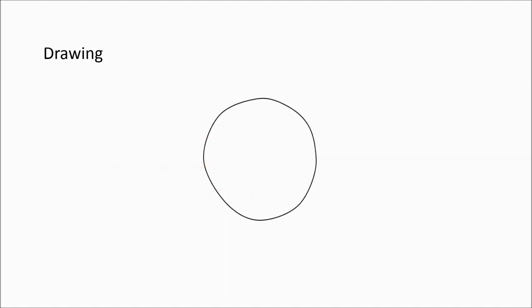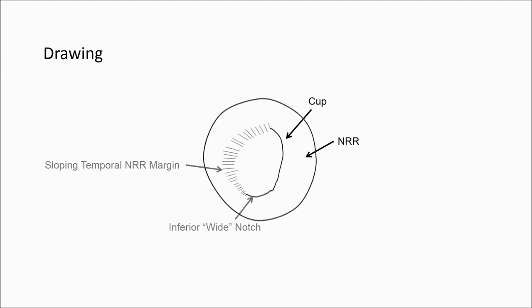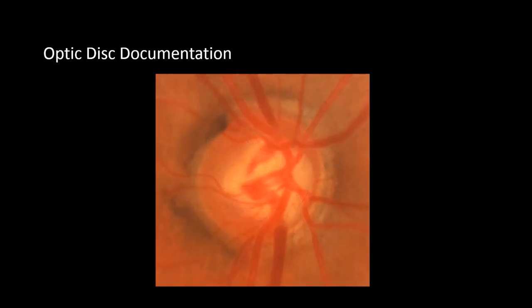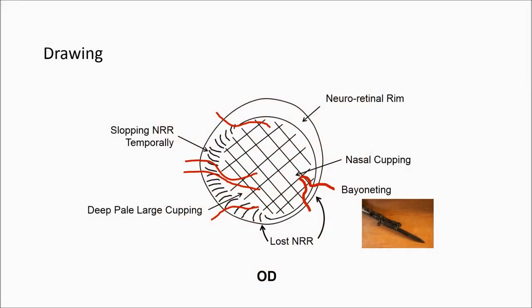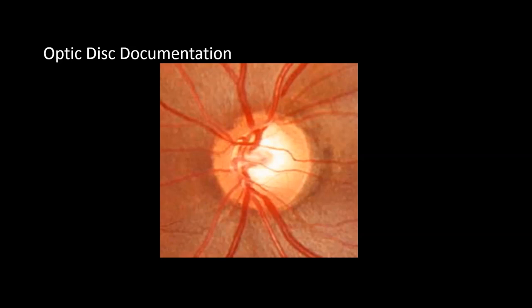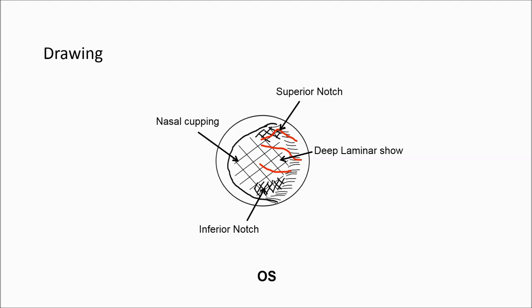Here is the drawing process seen in sequence for reference. In this optic disc with advanced glaucoma, the Elschnig ring can be seen almost entirely because of marked thinning of the retinal fibers. Note the total loss of the neuroretinal rim in a whole quadrant infero-nasally, with adjacent baring of the blood vessels, nasal cupping, and a pale deep cup. In moderately advanced glaucoma, subtle changes include superior and inferior notching, nasal cupping, and deep laminar show.